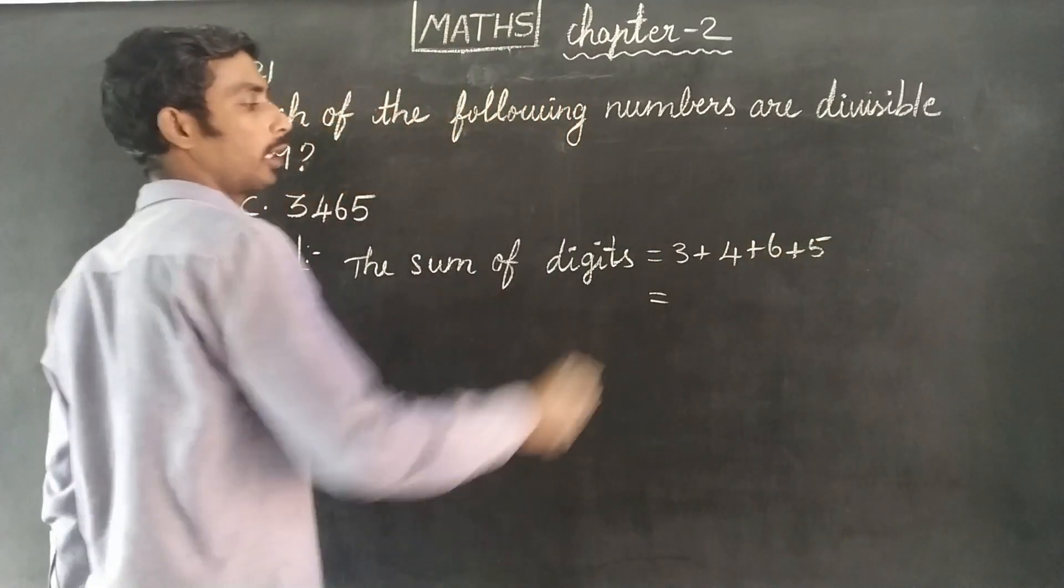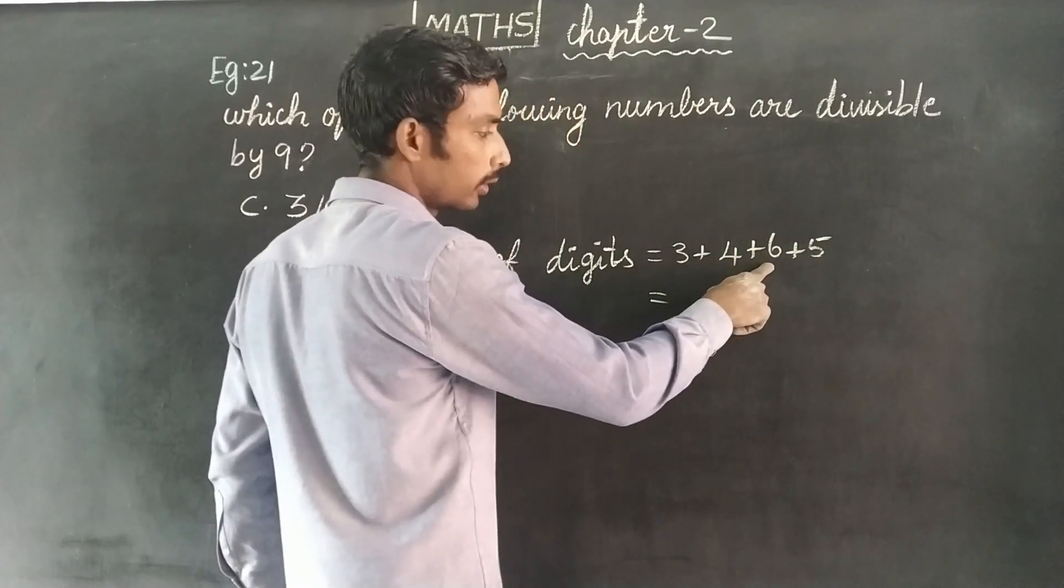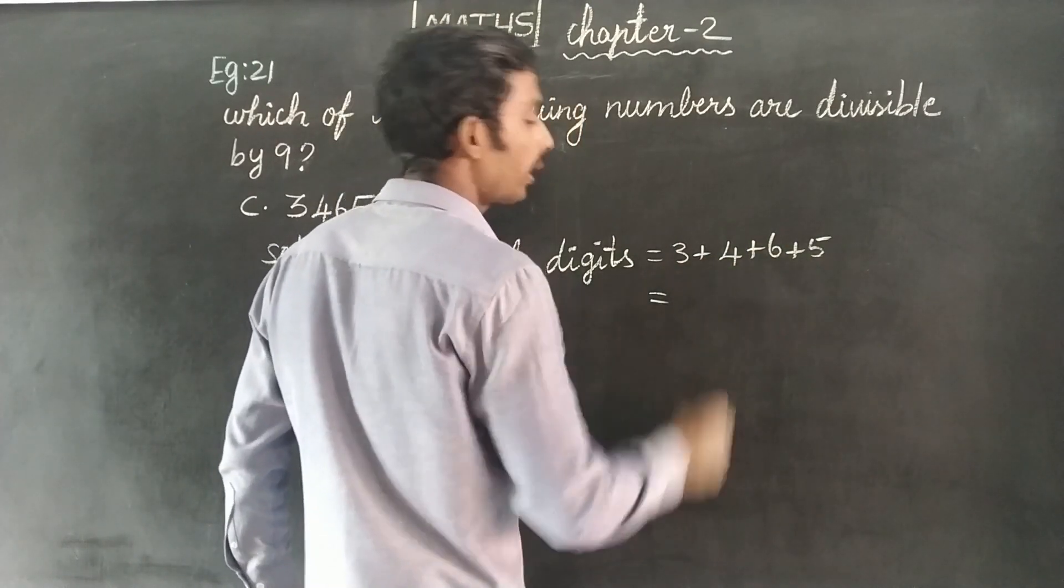3 plus 4 is 7, 7 plus 6 is 13, 13 plus 5 is 18.